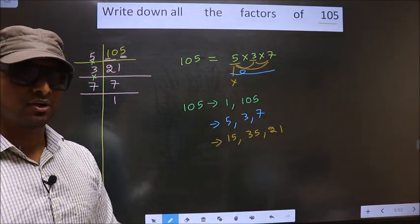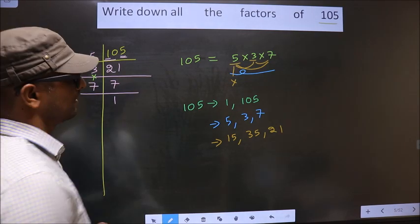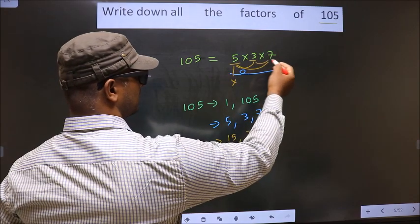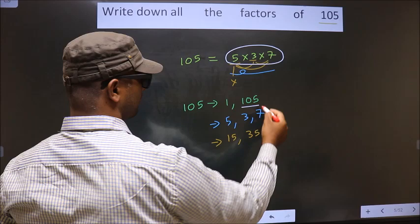Now you take a combination of 3 numbers. How do we take that? See, here we have only 3 numbers. If we take all the 3 numbers, we get 105 itself.